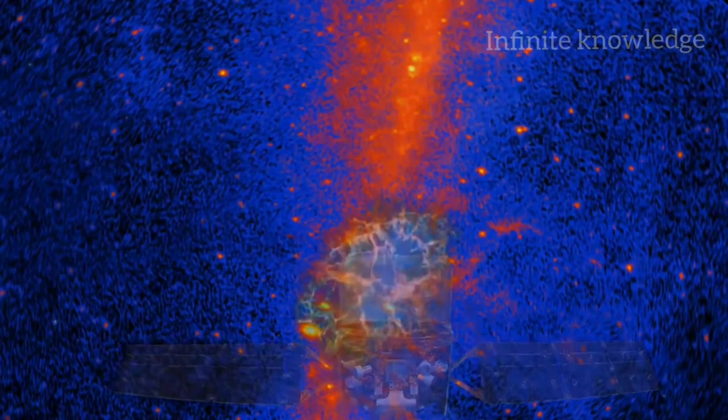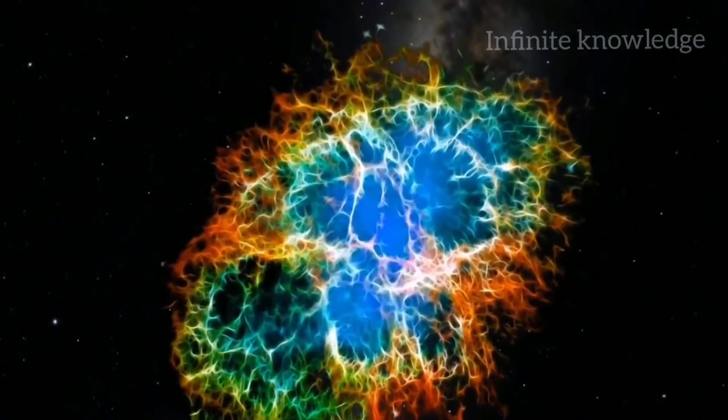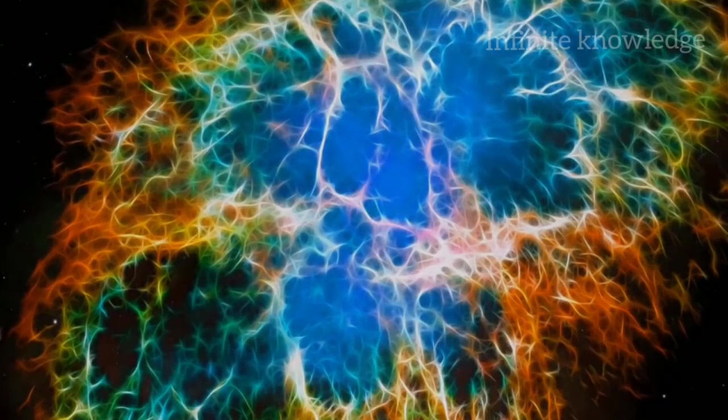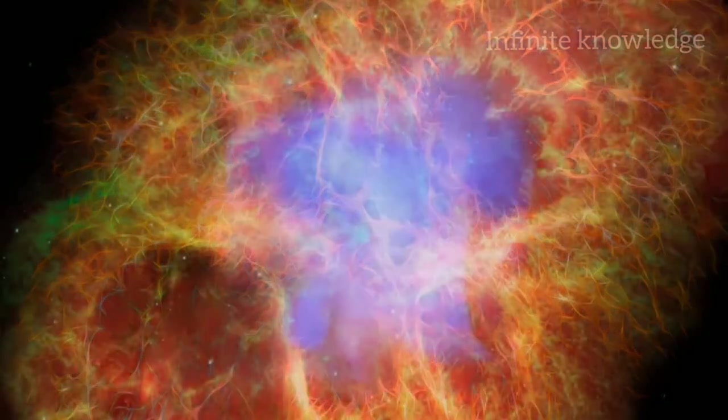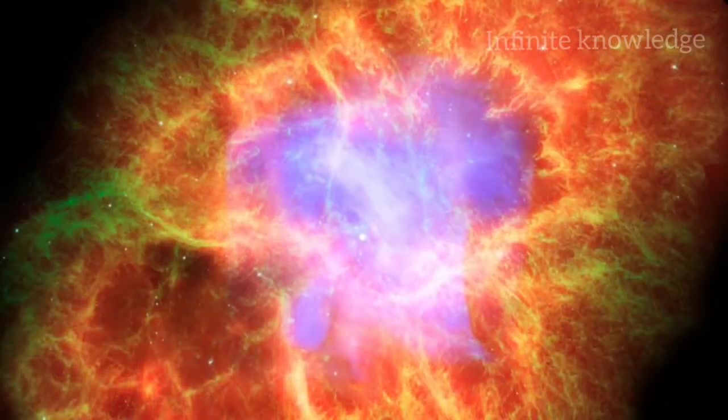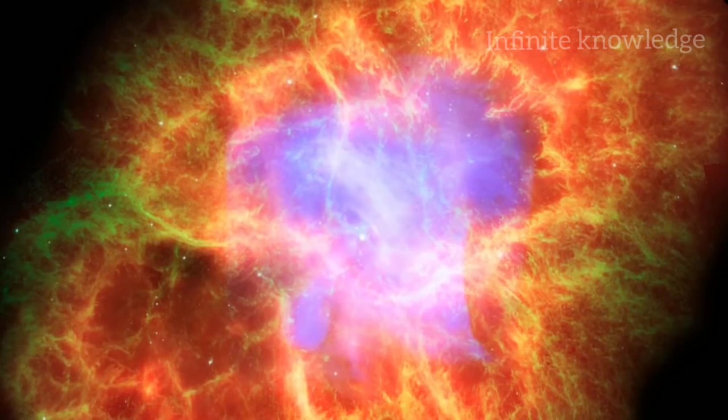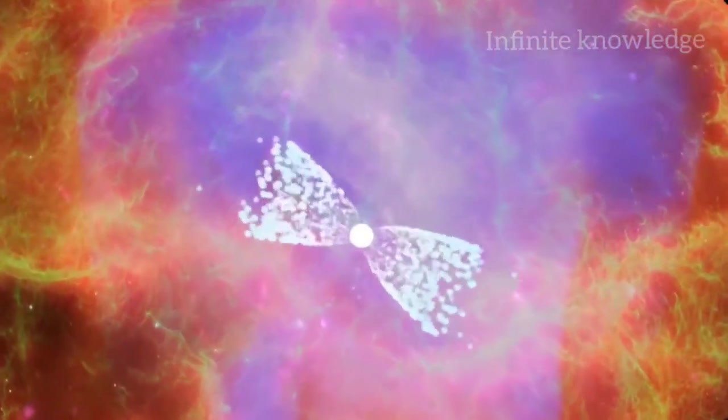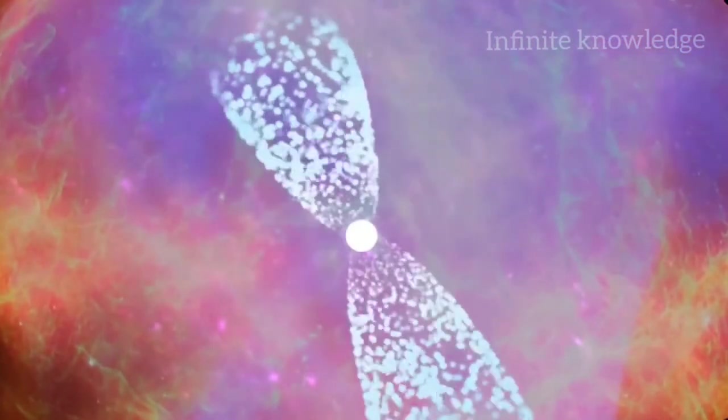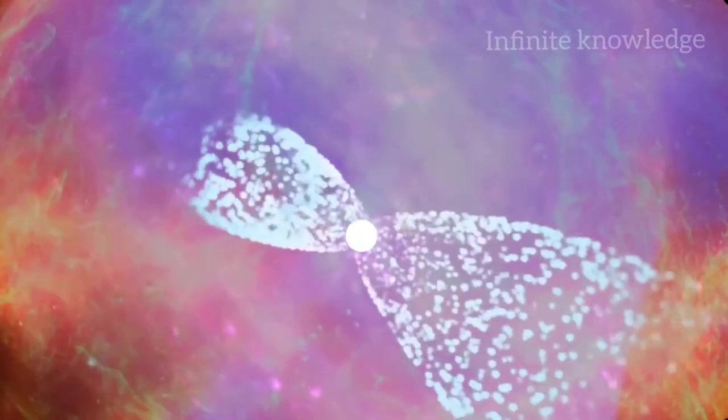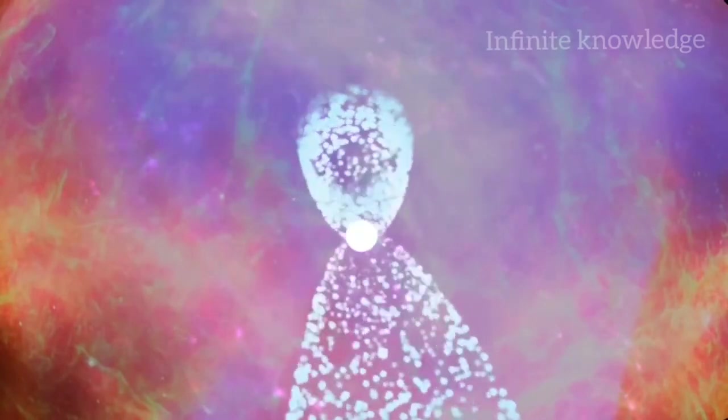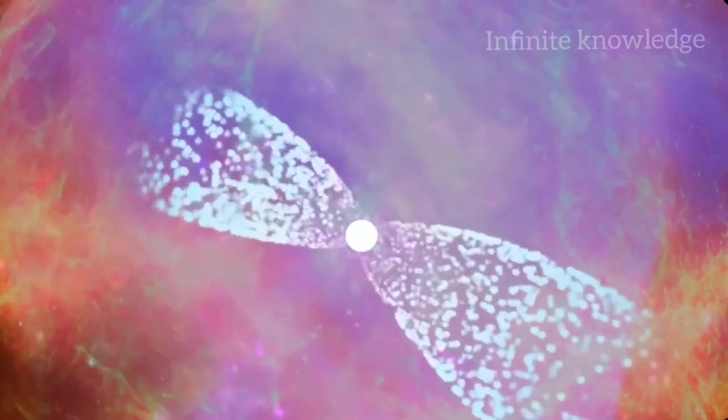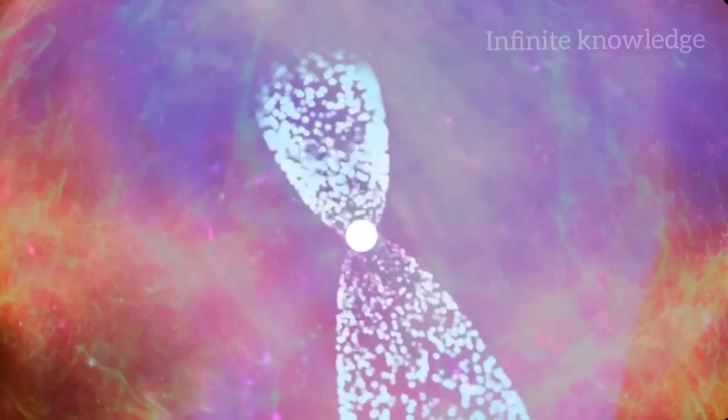The crab nebula is the remnant of a supernova explosion that humans saw almost a thousand years ago. Deep inside the nebula lies the star's rapidly spinning imploded core. Here an intense magnetic field focuses radiation at the star's magnetic poles, producing a beam of radiation sweeping across space like a lighthouse beacon. Here the star's magnetic field contains and directs the flow of charged matter.